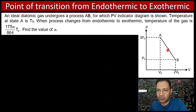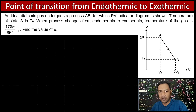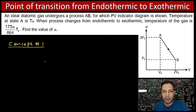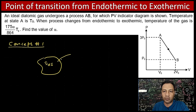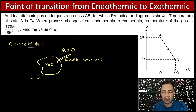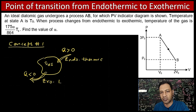We have to find at what temperature the process changes from endothermic to exothermic. Key concept one: suppose this is a system — if some heat enters the system, Q is positive and the process is called endothermic. When the system rejects heat, Q is negative and that process is exothermic.